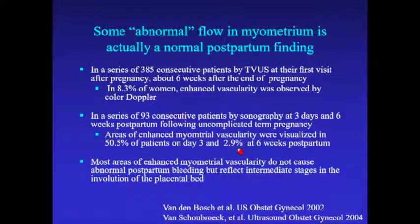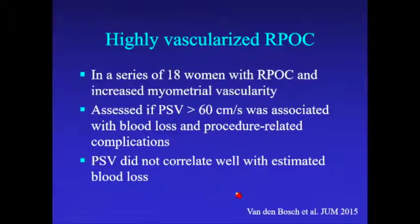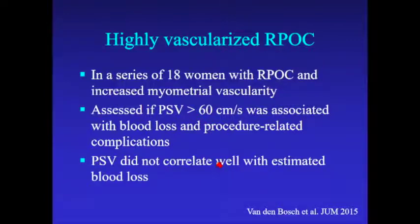In another series of 93 patients, 50% had abnormal vascularity at day three postpartum, dropping to 3% at six weeks. So it's very common to see vascularity in the myometrium. In a study on highly vascularized retained products, a peak systolic velocity greater than 60 was associated with blood loss and procedure-related complications, but the statistical correlation didn't hold up. The paper has been misquoted to say highly vascularized retained products doesn't make a difference — but that study started with highly vascularized cases. If you look at all retained products, you'll see more of a spectrum.